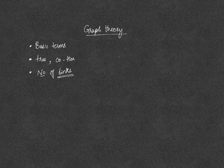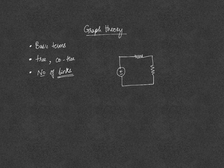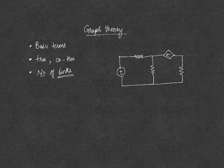We will consider a network for the purpose of understanding how to derive a graph for a particular electrical network. Here you have a dependent current source and here you have a voltage source. We will now draw the graph for this.